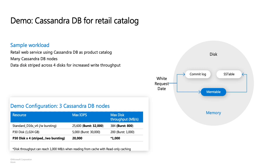In this demo, we will look at a Cassandra DB setup being used for a retail catalog, configured to take advantage of caching. The way Cassandra DB works in this configuration is that it writes to the commit log and the data disk. After the application writes are done, it continues writing because of background logic that merges the written files. For this configuration, we're demonstrating using three Cassandra DB nodes on three VMs, each with four disks attached. With four striped disks, you can reach up to 20,000 IOPS and 1,000 MB/s throughput.